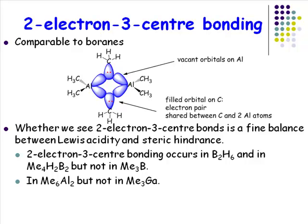Do all organometallic molecules form these kinds of bonds? Unfortunately not. Whether you see electron-deficient bonding is a very subtle balance between Lewis acidity and the steric demands of your system. A very Lewis acidic system wants its orbitals involved in bonding, so elements like aluminium have a high propensity to involve all their orbitals in electron-deficient bonding.